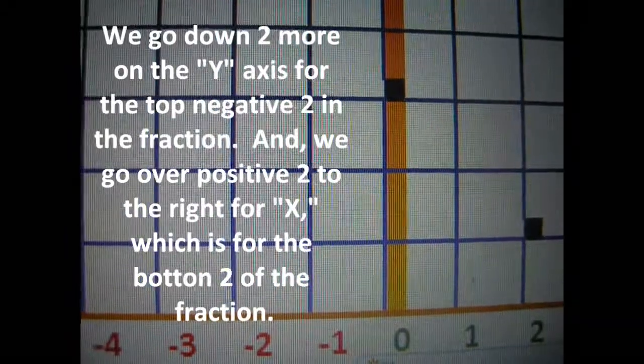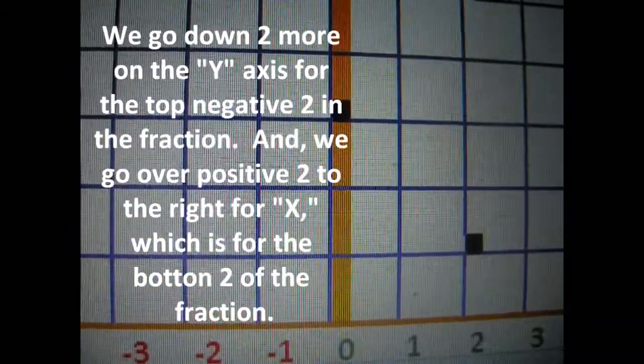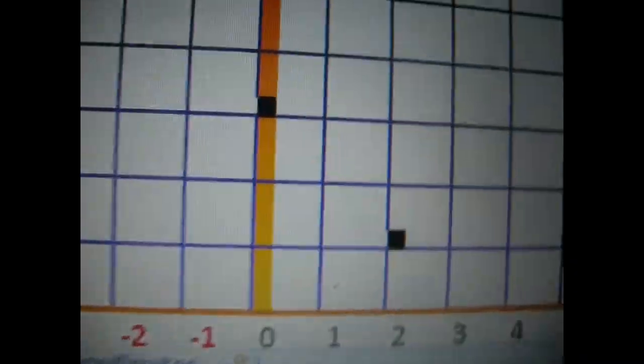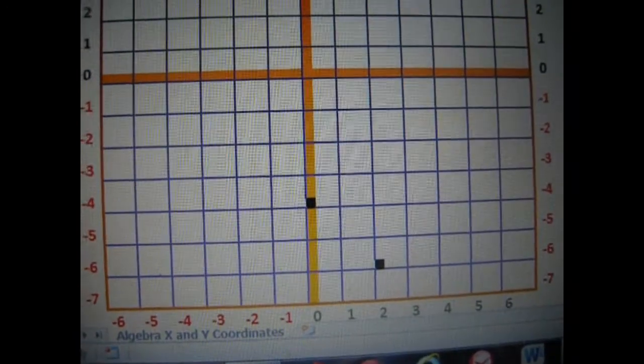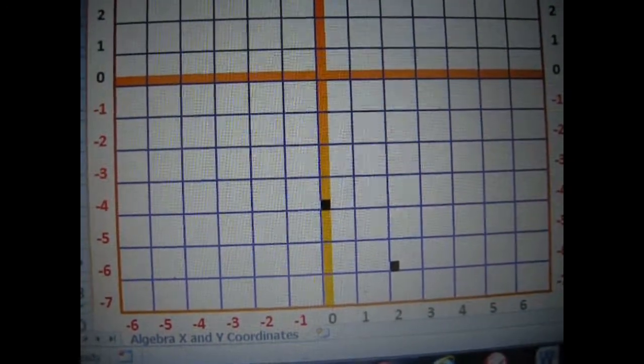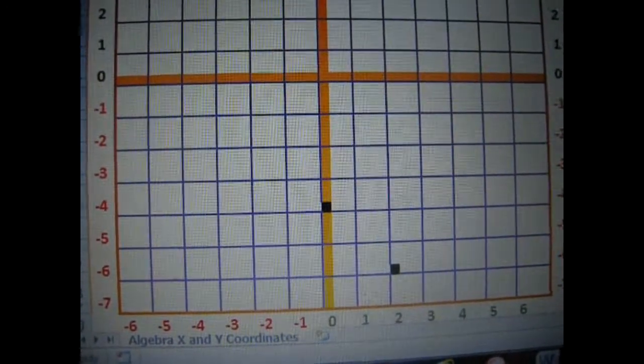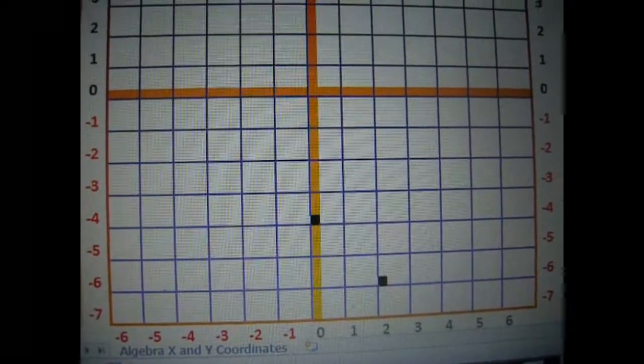And then we go over to positive for the x, 1, 2. And therefore, you have your next axis or your intersection for the x and the y. And you can go ahead and draw the line there.